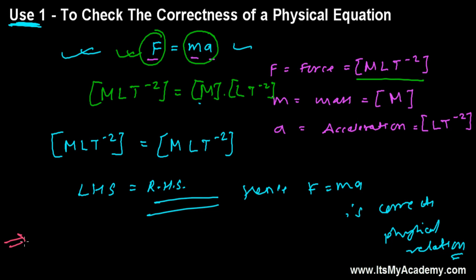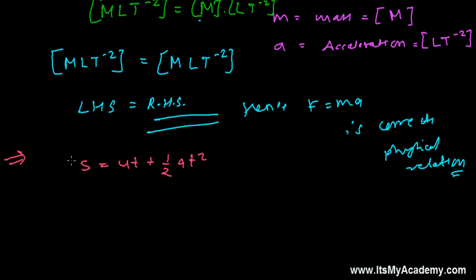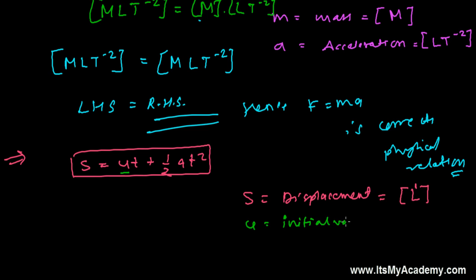Let me give you one more example. S equals UT plus half AT squared - this is another equation of motion. Here, S is representing the displacement and dimension of displacement is L - it's simply length. U is initial velocity. Since it is velocity, we can easily guess what is the dimension: length divided by time, that is LT^-1.